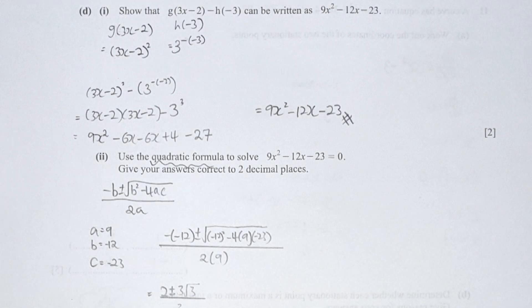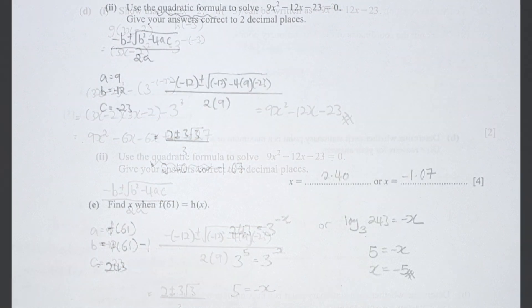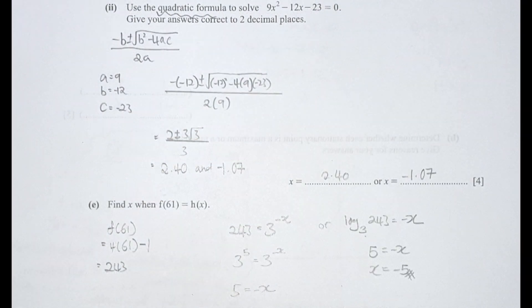For part d, it's a continuation from the function. I substituted the values and calculated accordingly, getting 9x² − 12x − 23. For part d number 2, they specifically mentioned the quadratic formula: negative b plus or minus square root of b² − 4ac, all over 2a. Substituting a as 9, b as negative 12, and c as negative 23 gives results of 2.4 and negative 1.07 after correcting to two decimal places.